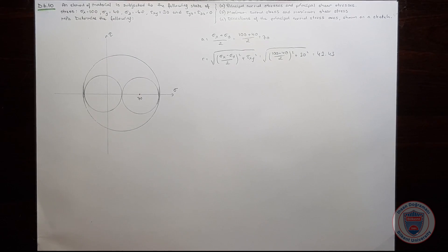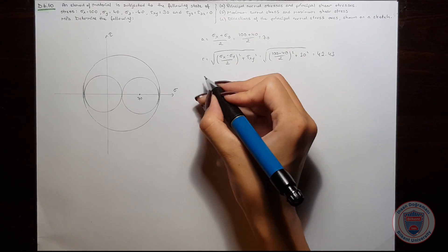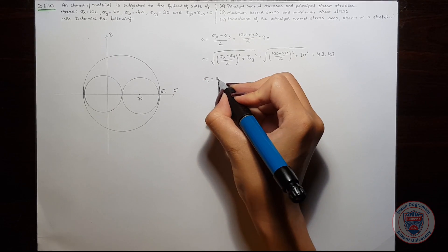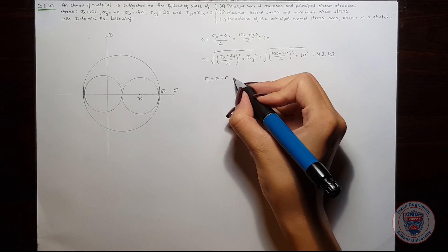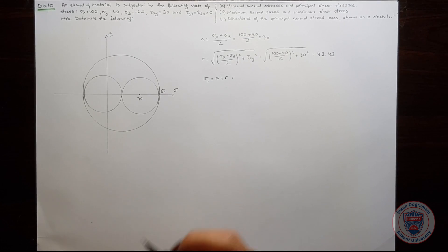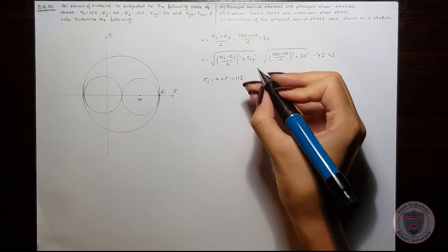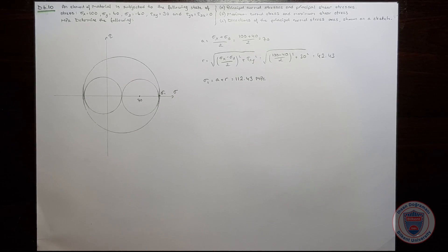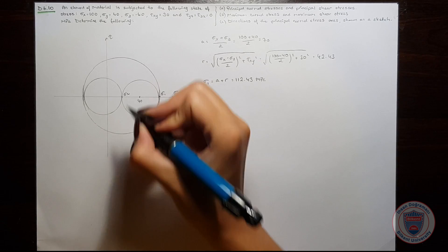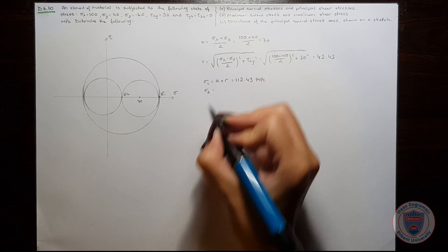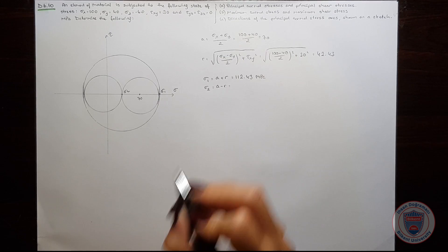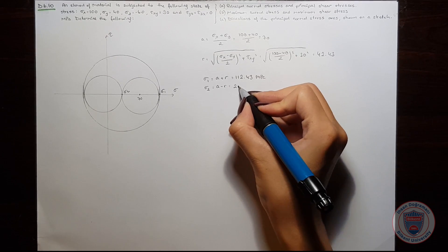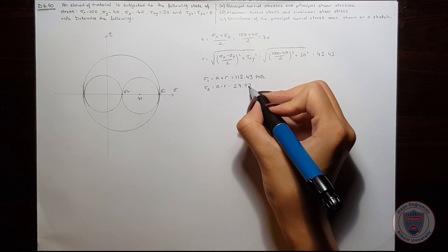Now we can compute sigma 1 and sigma 2. Sigma 1 will be equal to A plus R, and we know that A plus R is equal to 112.43 MPa. Now let's calculate sigma 2. Sigma 2 will be A minus R, and it will be equal to 27.58 MPa.